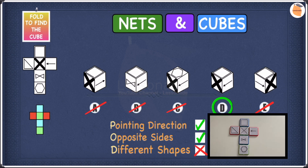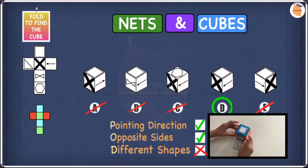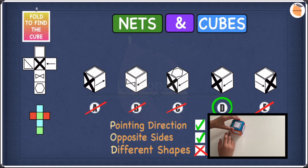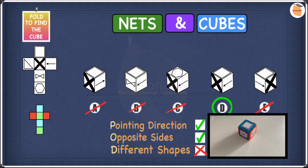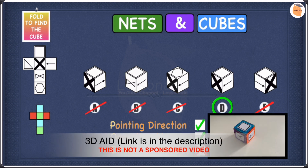Let's check if D is right by folding the net. And as you can see, D is correct. This folding aid helps construct the cube to gain a better understanding of how the net folds in a more effective way. The link is in the description below and in the comments section.